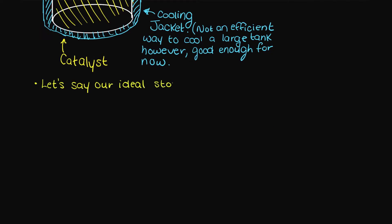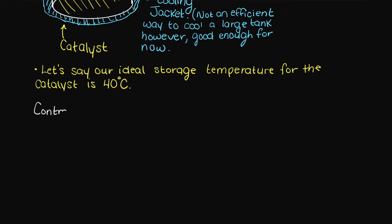Let's just say that our ideal storage temperature for the catalyst is 40 degrees C. Well we can achieve this desired temperature through the use of a control system, so let's talk about what exactly a control system is.